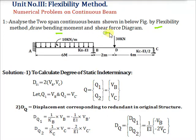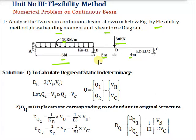Draw bending moment and shear force diagram. In the given figure, AB span is loaded with 10 kN per meter UDL and span length is 6 m. Span BC is loaded with 30 kN point load at point D, which is 2 m from B and 4 m from C. At B and C there are spring supports; spring constant for B is EI and spring constant at C is EI/2. At A there is a fixed support. Moment of inertia of each span is constant and equal to EI.